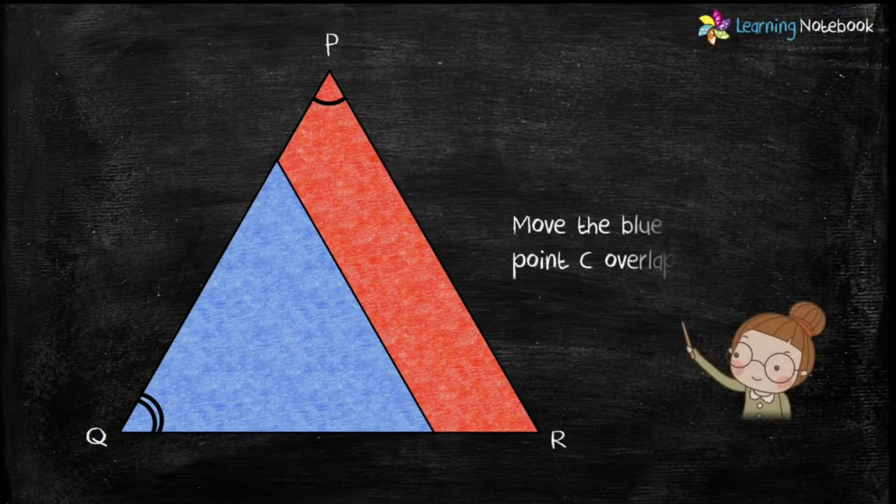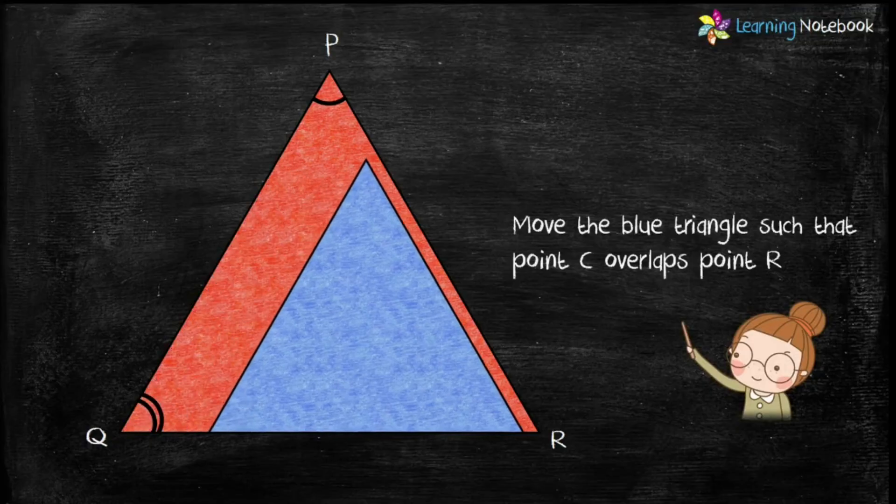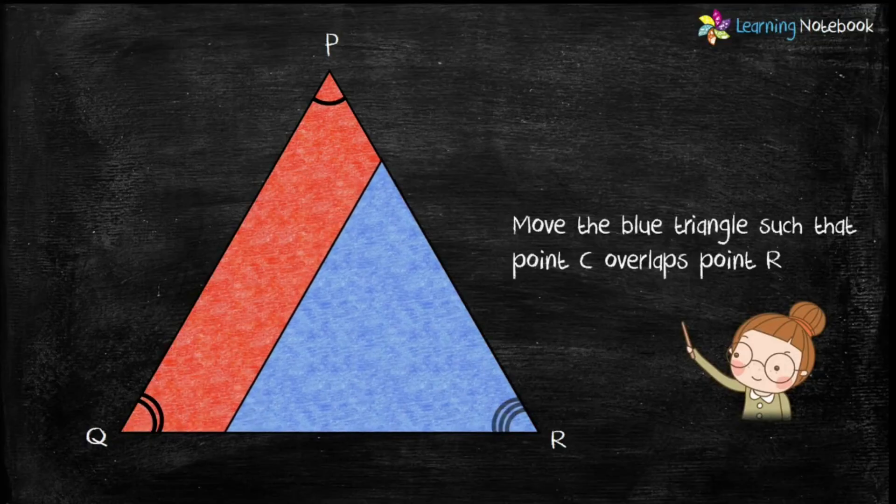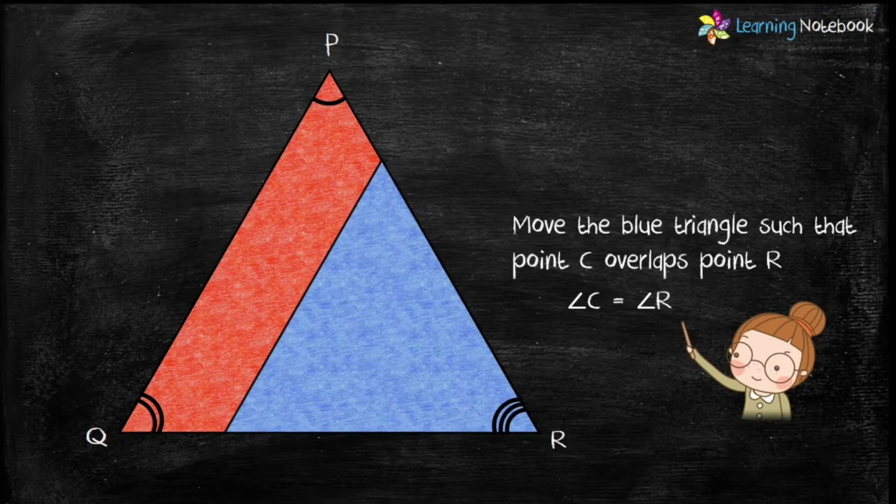Now students, move the blue triangle such that point C overlaps point R. Again, we find angle C equals to angle R.